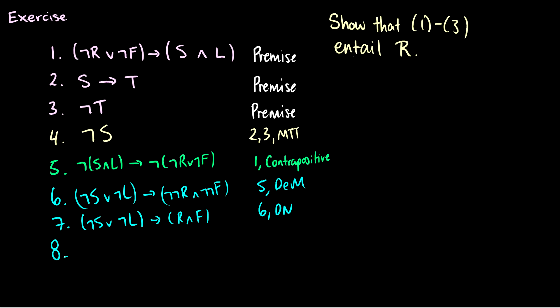Okay, finally, we have something we can work with. So we have not S, and we have not S or not L arrow R and F. Now using addition, we can get not S or not L, and that's four and addition, or otherwise known as or introduction. Now finally, we can do modus ponens with seven and eight to get R and F. Now why can we do that? Because we have not S or not L, and seven says, well, if not S or not L, then we get R and F.